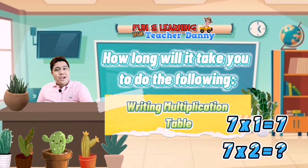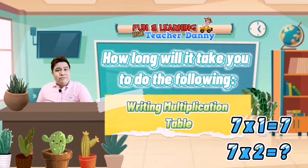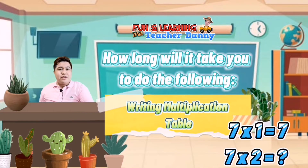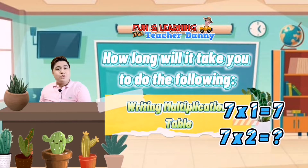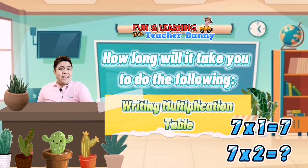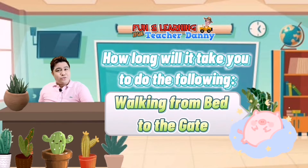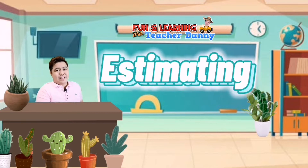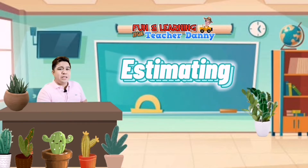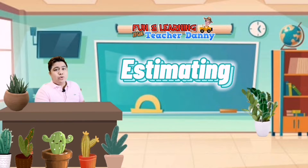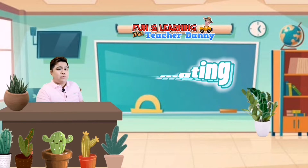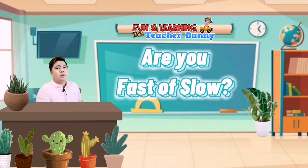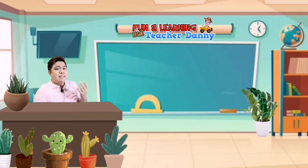Number 2: How about writing the multiplication table by 7, from 7 times 1 equals 7, all the way to 7 times 13? Number 3: How about walking from your bed to the gate of your house? You are now estimating. Estimating your speed is one of the ways to determine if you'll finish the activity on time or reach your destination fast. You've probably used the words fast or slow to describe motion, but you are actually describing speed.